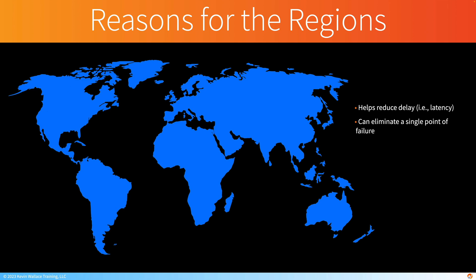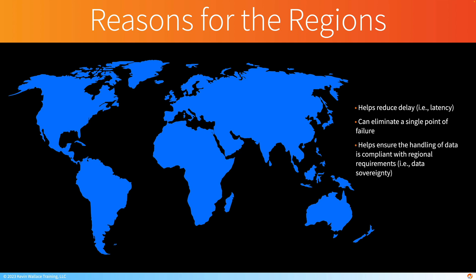Another benefit of multiple regions is redundancy — we don't have one region that's a single point of failure. For example, if the Ohio region became unavailable, we could fail over to the Northern Virginia region. There's also the compliance benefit: having regions in different countries better equips us to handle regulations like the EU's GDPR or US HIPAA. Having a region in a specific country and ensuring it adheres to that country's standards is a feature we refer to as data sovereignty.